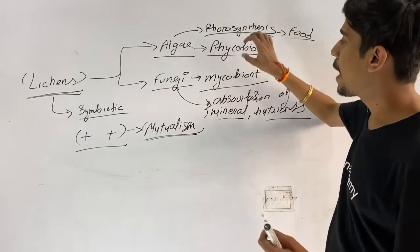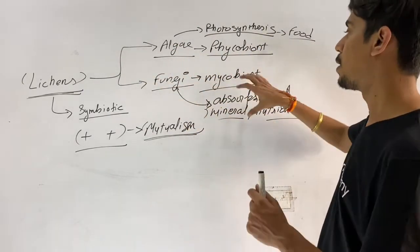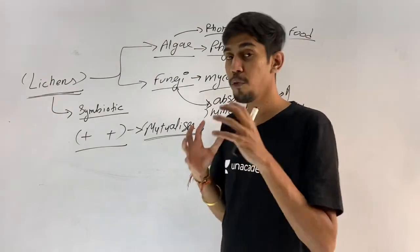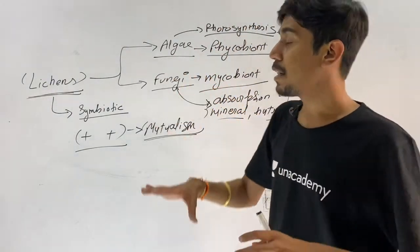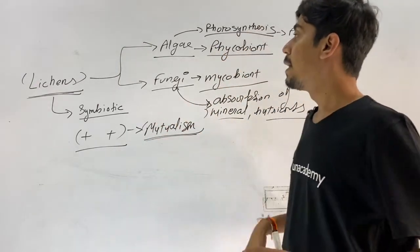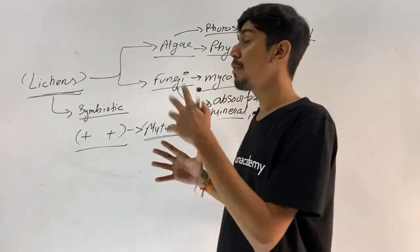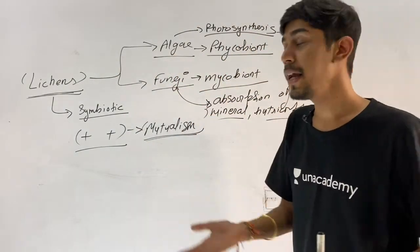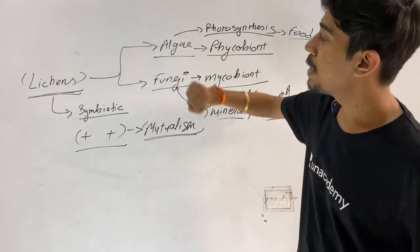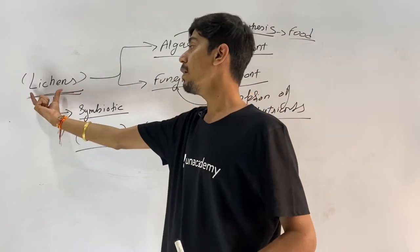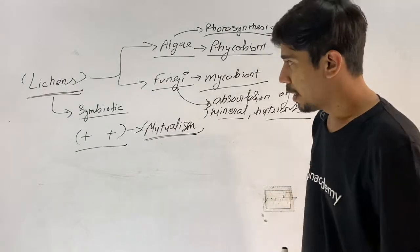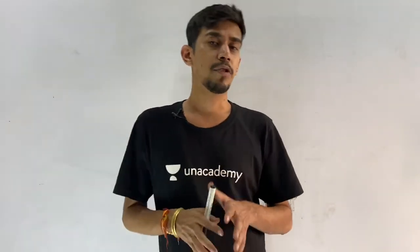The algal component is the phycobiont and the fungal component is the mycobiont. They live so closely together that you won't be able to differentiate between the algae and fungi when you look at a lichen. The algal and fungal components cannot survive without each other — they always live together, and together they form the lichen. This symbiotic plus-plus mutualistic relationship is called a lichen.